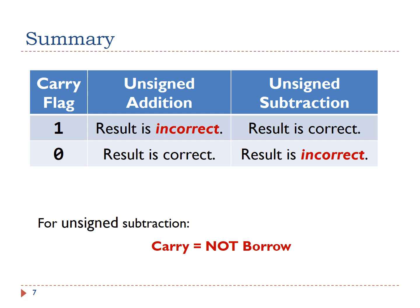In summary, if the carry flag in the Program Status Register is 1, then the result of ALU is incorrect for unsigned addition, but correct for unsigned subtraction. If the carry flag is 0, then the ALU result is correct for unsigned addition, but incorrect for unsigned subtraction. Software needs to watch the carry flag to detect any errors.